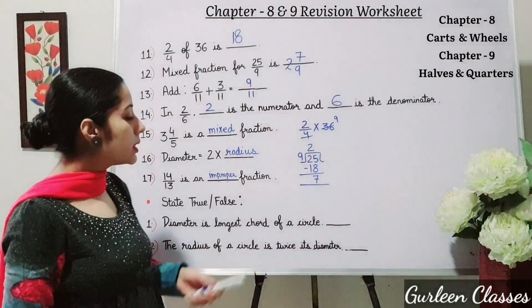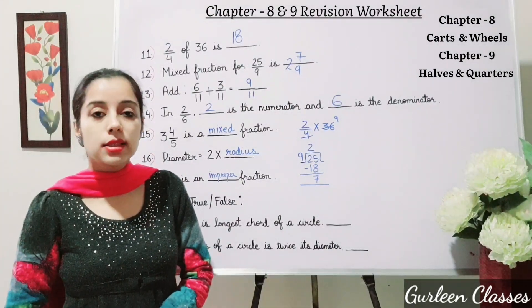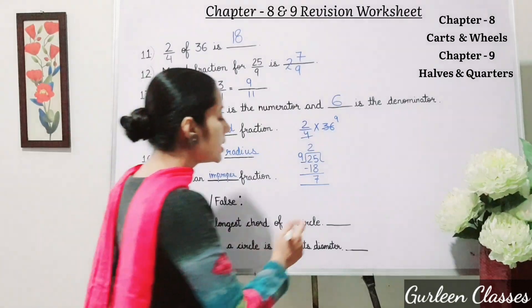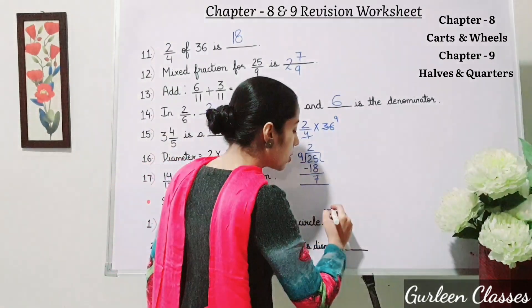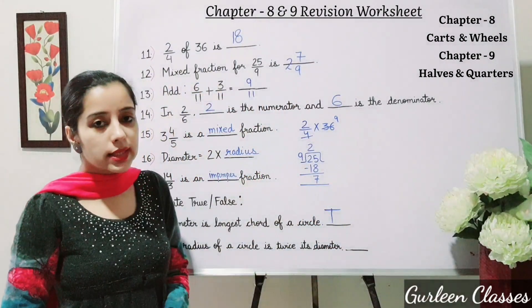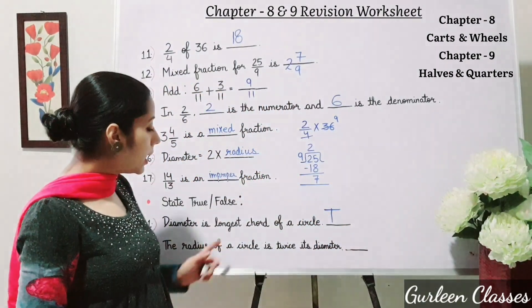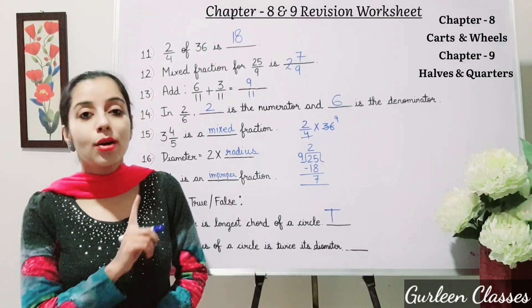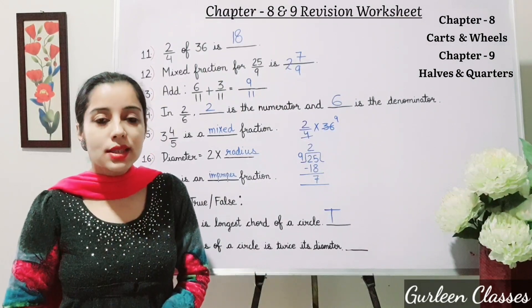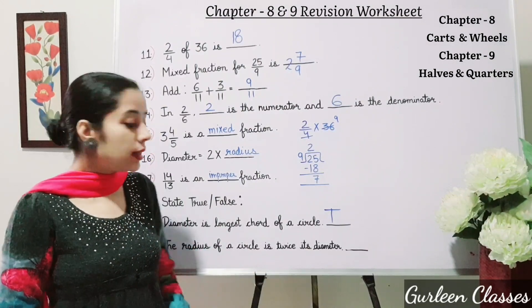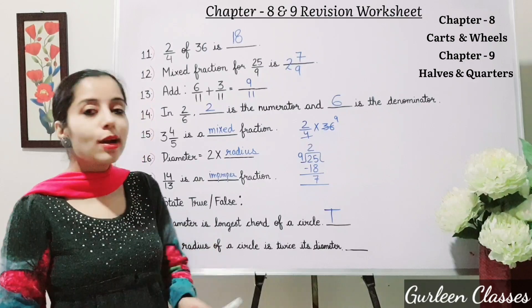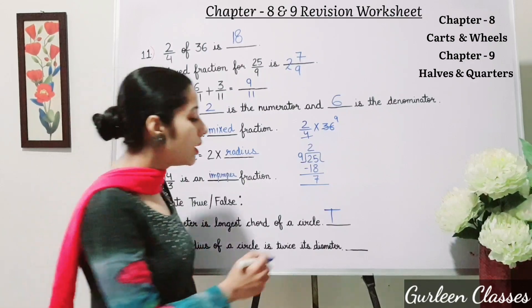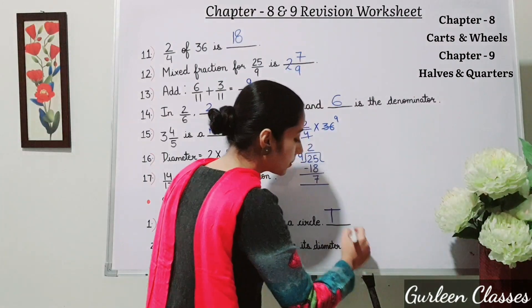Next, state true or false: diameter is the longest chord of a circle — this is true. Next: the radius of a circle is twice its diameter — this is false. The correct statement is: the diameter of a circle is twice its radius.